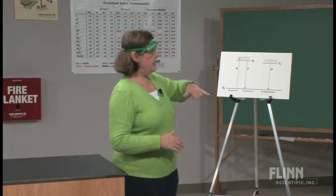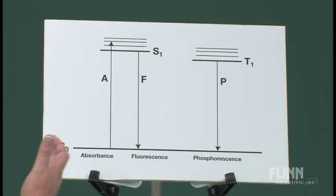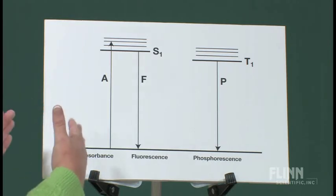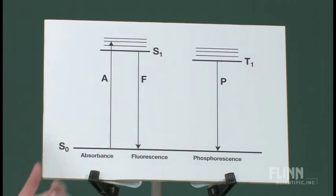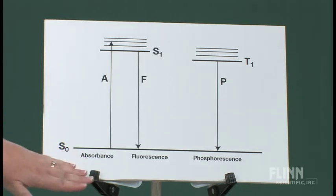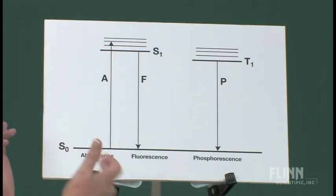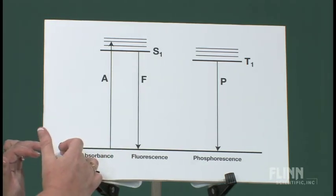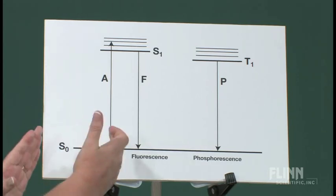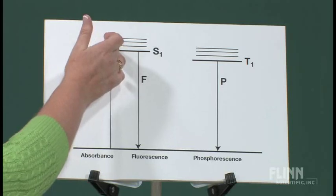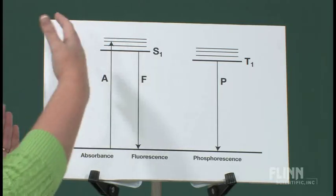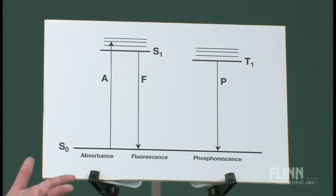Let's look at this, which really explains the difference between absorbance, fluorescence, and phosphorescence. Absorbance, as we know, excites an electron from a ground state, noted here as S0. The substance absorbs the light energy; it's excited to a higher energy level, the electrons are excited to a higher energy level, which we'll call the first excited state, S1.